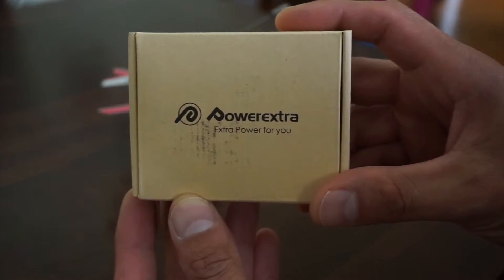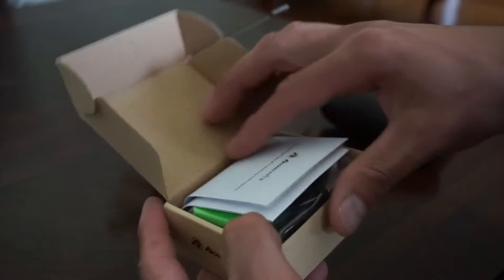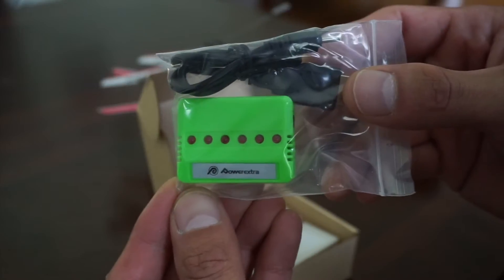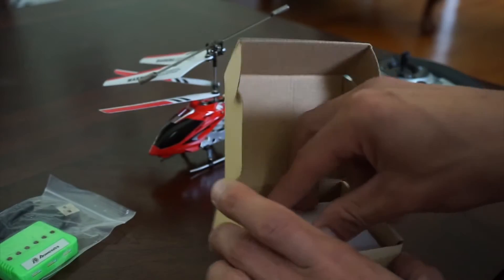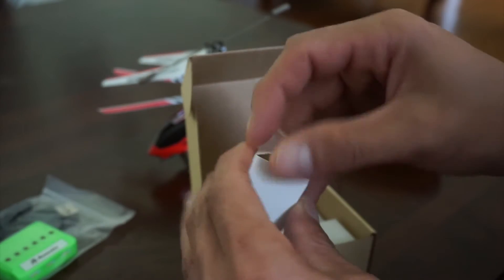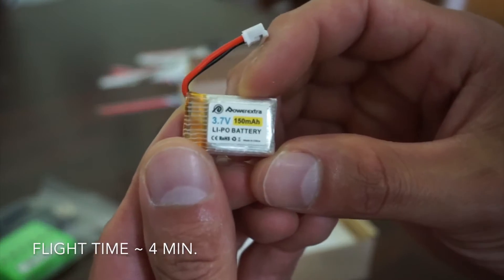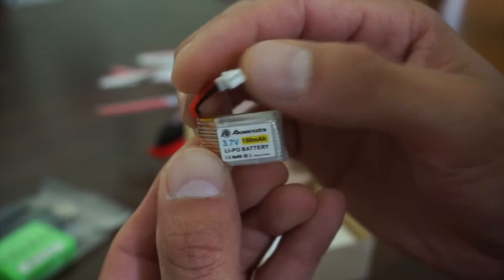I ordered this guy on Amazon for about eight or ten bucks. This little fella here allows me to have multiple batteries at once charging, and I'm going to modify the helicopter so that I can just swap out the batteries. Let's take a look. These are 150 milliamp hour, 3.7 volt batteries, the same thing that is inside the helicopter itself right now, but now we have these little connector wires here.